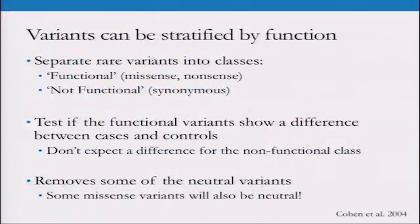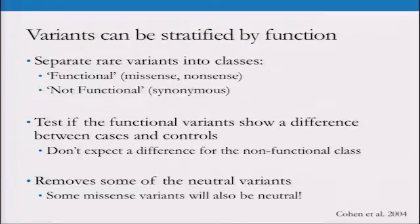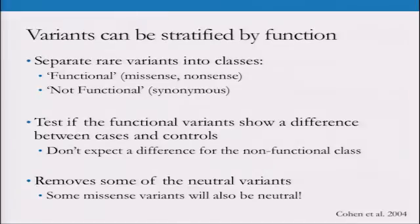One way to get rid of neutral variation is to stratify by function. You could look at each rare variant and ask: is this a synonymous change, or is it actually going to alter the protein the gene codes for — is it nonsense or missense? You might expect that silent changes should be the same between cases and controls, but maybe cases have more of the rare functional ones, more missense mutations. However, missense mutations are a mix of neutral to risk and protective on their own — not all missense mutations are going to be bad.